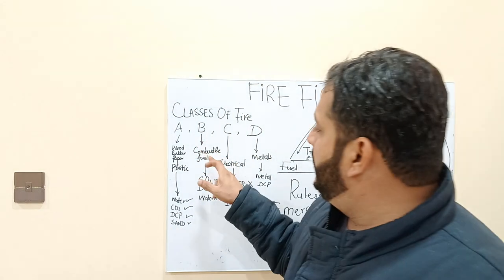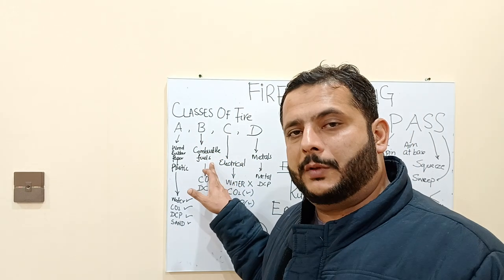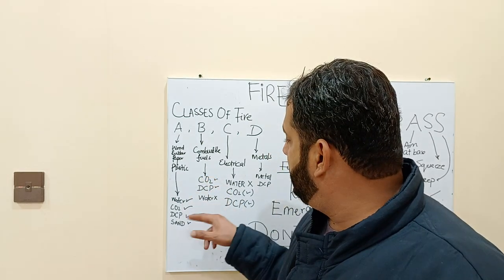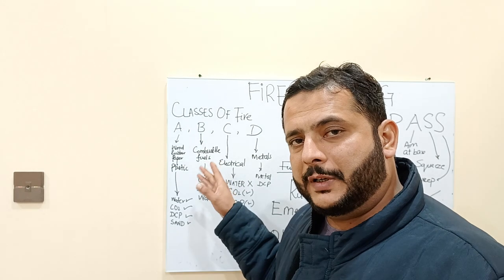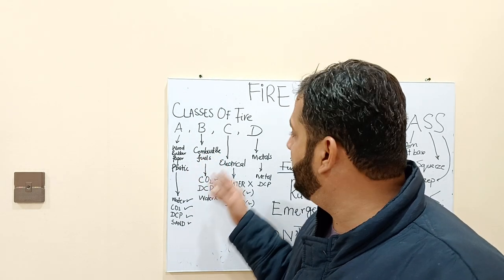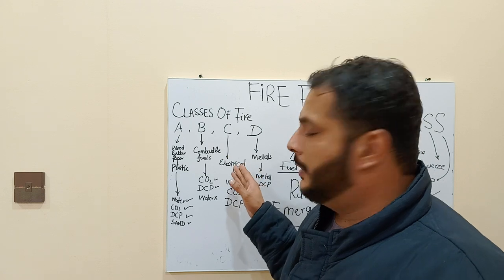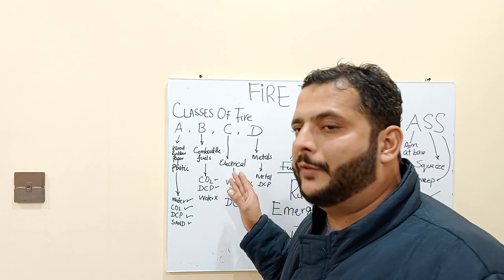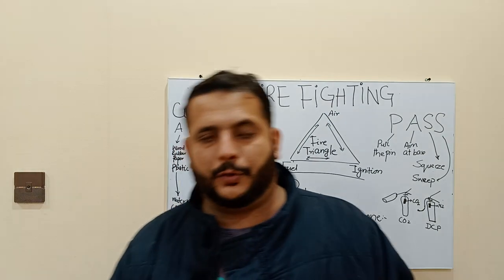The second class is Class B fire, which results from combustible fuels such as diesel, gasoline, and gas-based ingredients. Class B fire comes from these types of materials. Then we come towards Class C — the C type results from electrical sources. You have electrical equipment in your home and in organizations, and when this electrical equipment is not managed properly it can cause fire.